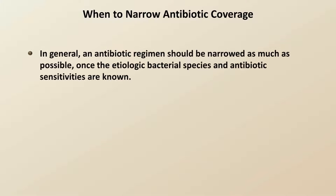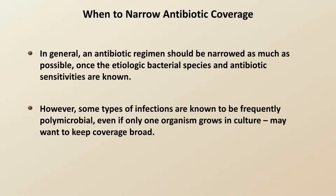In a patient who has initially started on multiple antibiotics or on a single very broad antibiotic, how does the clinician know when to narrow antibiotic coverage? In general, an antibiotic regimen should be narrowed as much as possible once the etiologic bacterial species and antibiotic sensitivities are known. However, some types of infections are known to be frequently polymicrobial even if only one organism grows in culture, in which case the clinician may want to keep coverage very broad.